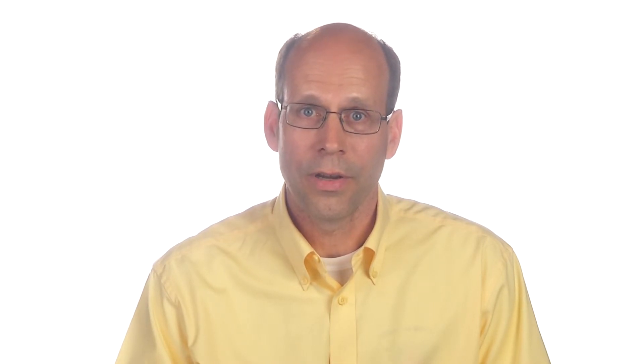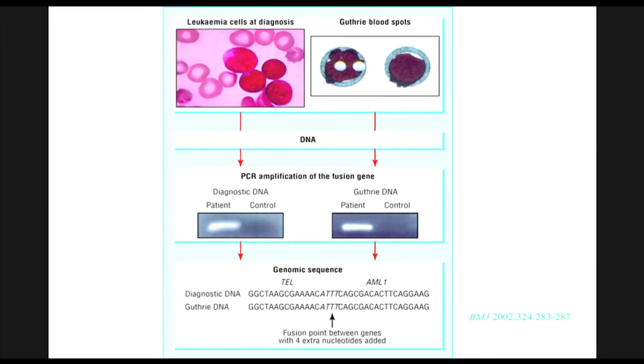We've been able to do some interesting studies on the timing of these genetic events in children, and we've been able to do this with the availability of Guthrie cards. Guthrie cards are samples of blood that are taken for all children immediately after birth, and they're available for all children in California.